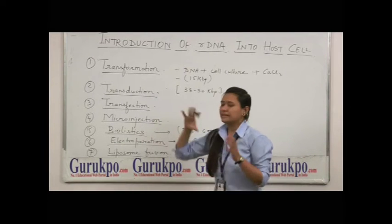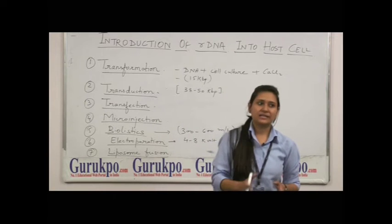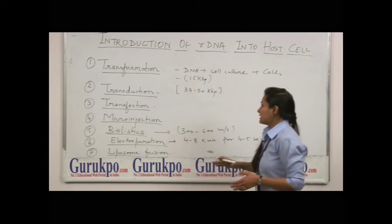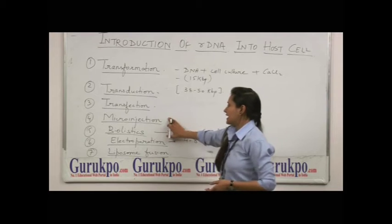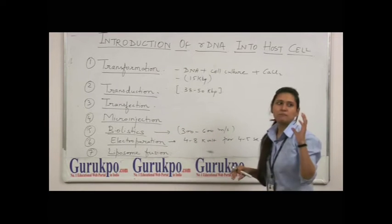In microinjection, the DNA is directly injected into the bacterial cell or the eukaryotic cell using a micropipette.